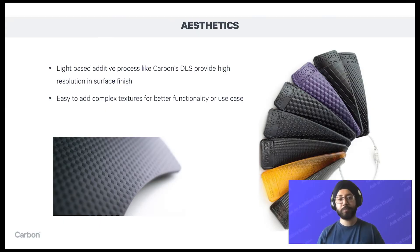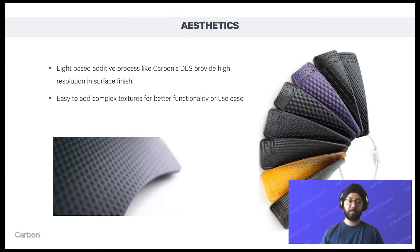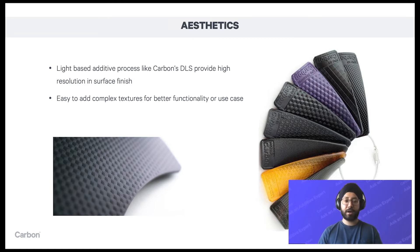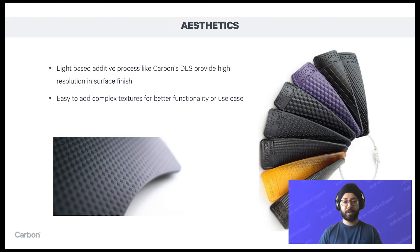Speaking of surface finish, most 3D printing processes based on light-based systems, like Carbon's DLS, tend to have very high resolution for surface finish. As you can see in these examples, it's very easy to add textures to the surface of parts using the Carbon software, which can provide better functionality for the use case. If you're holding a part and need more grip, you can add different kinds of textures on different materials — it's not limited to one material set. Adding textures in injection molding can be slightly harder, or even impossible depending on the geometry, and at least more expensive.